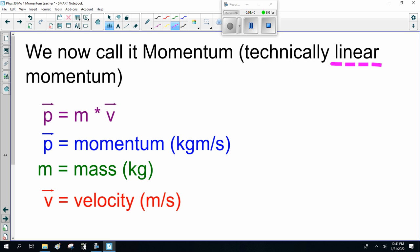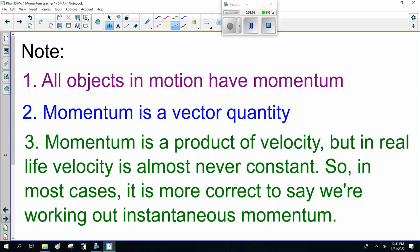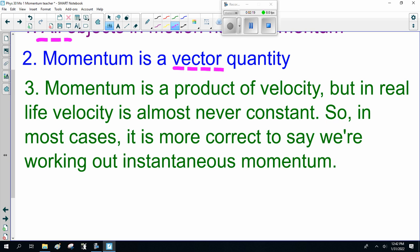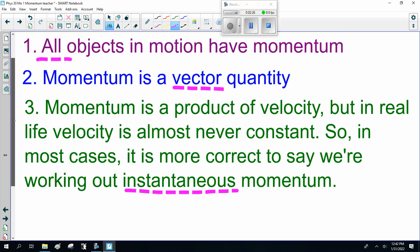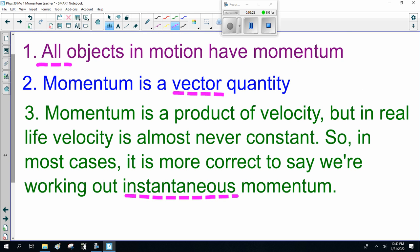Now this is P equals M times V. P is momentum in kilogram meters per second, mass is kilograms, and V is velocity in meters per second. Notice it is a vector. Note: all objects in motion have momentum. Momentum is a vector quantity with magnitude and direction. Momentum is a product of velocity, but in real life velocity is almost never constant, so in most cases it's more correct to say we're working out instantaneous momentum, or momentum at one instant.